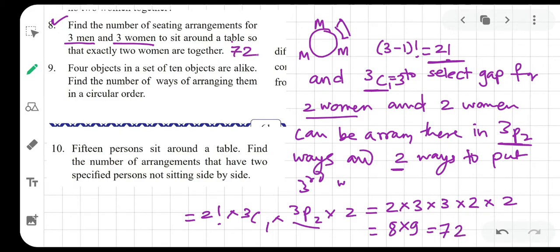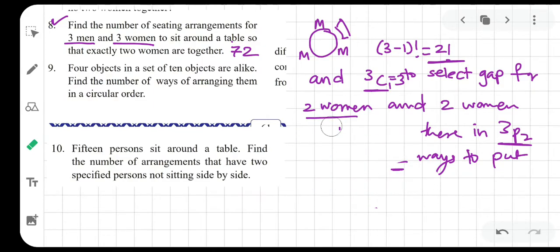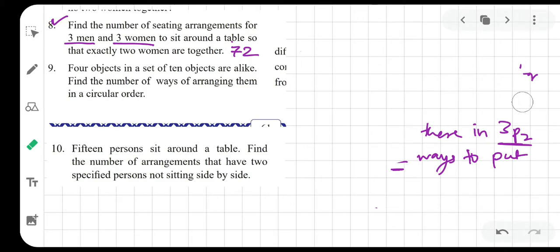So now it is 8 into 9, which is 72. So the answer to the eighth question is 72. This is the correct answer. I hope you can think of different ways. If you're not leaving out anything in your consideration, your answer will be correct. Now let's move ahead with the ninth problem. Four objects in a set of ten objects are alike.